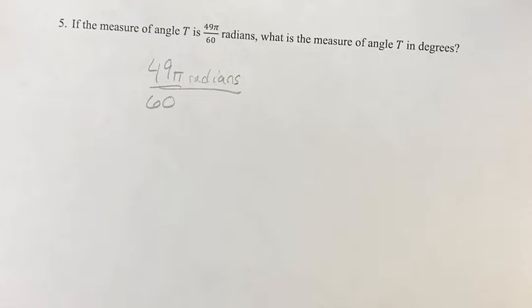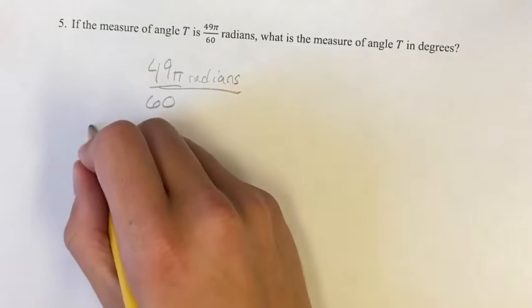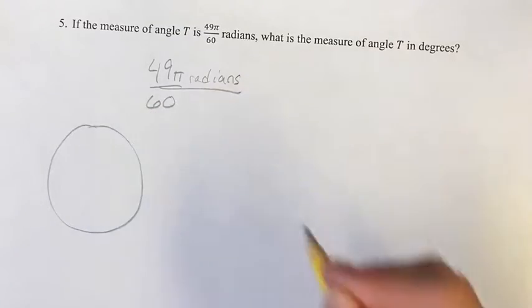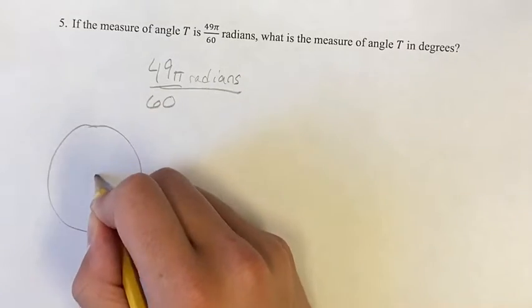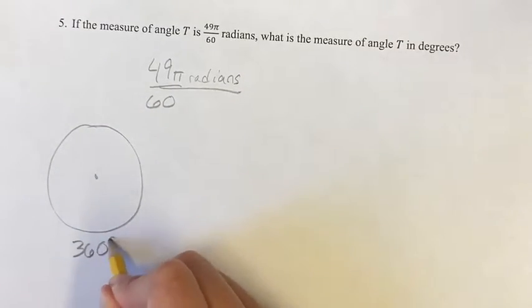If you don't remember the conversion rate between degrees and radians, you can think about one full circle. One full circle, we know, is 360 degrees, and we also know that it's 2π radians.